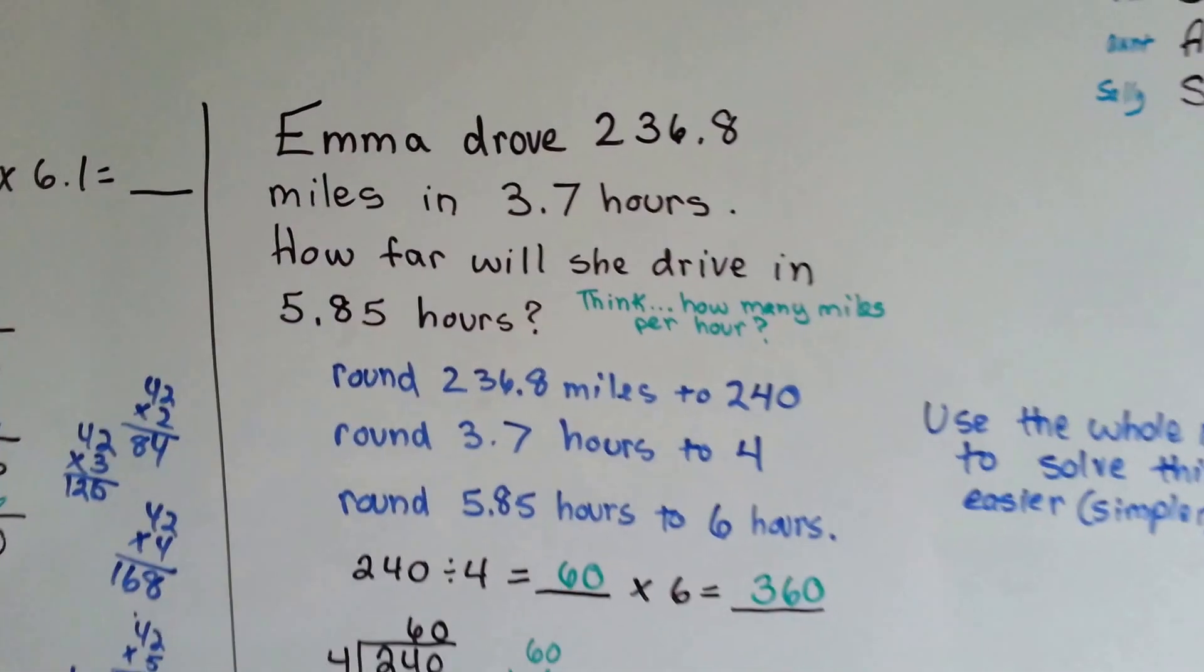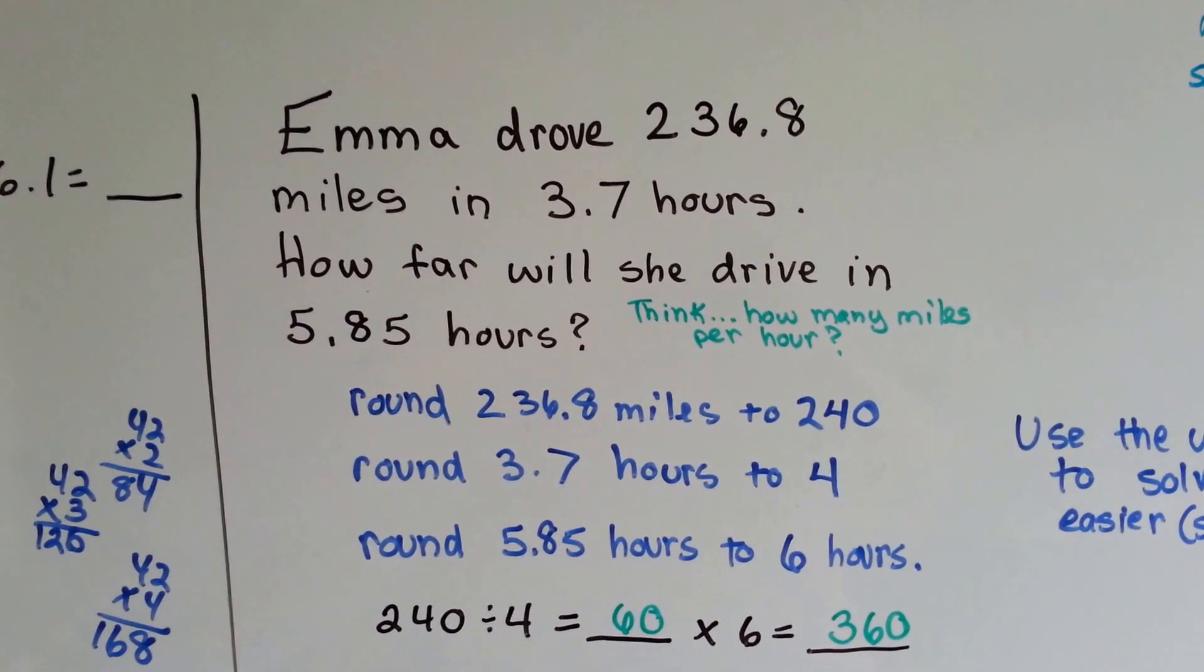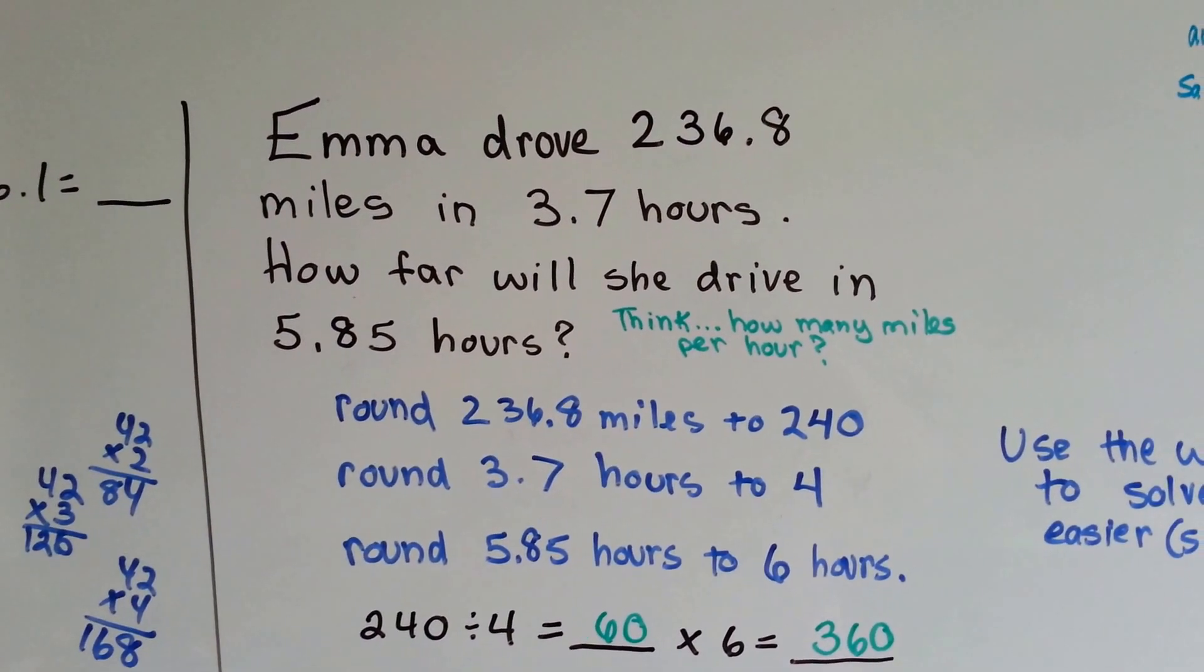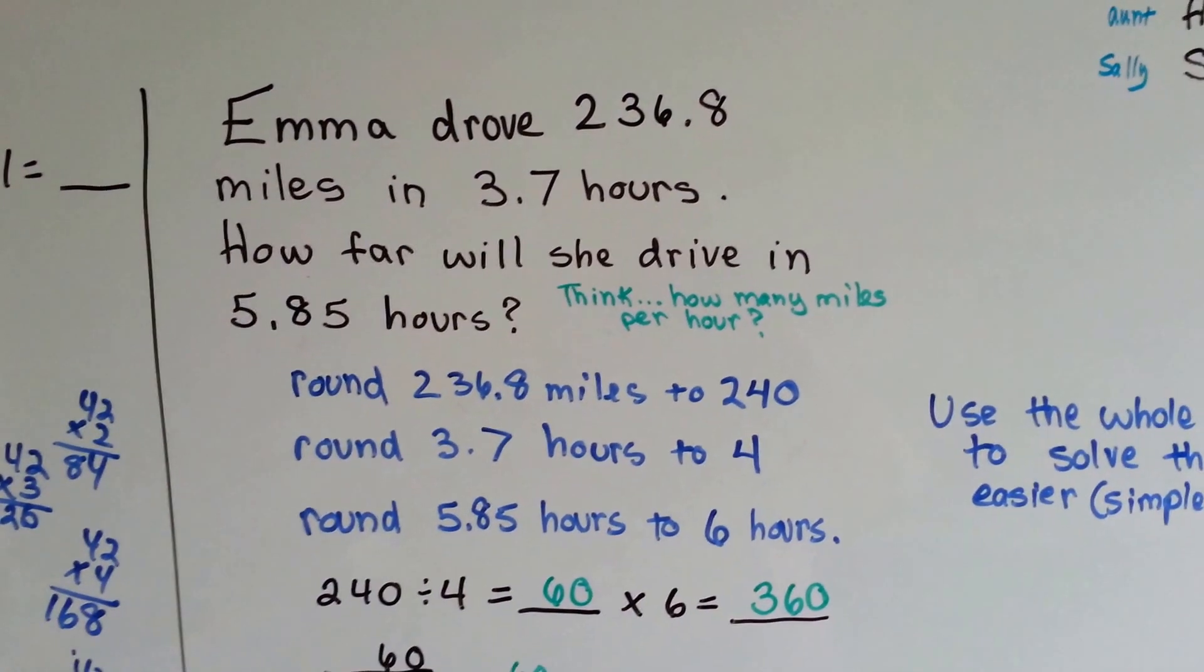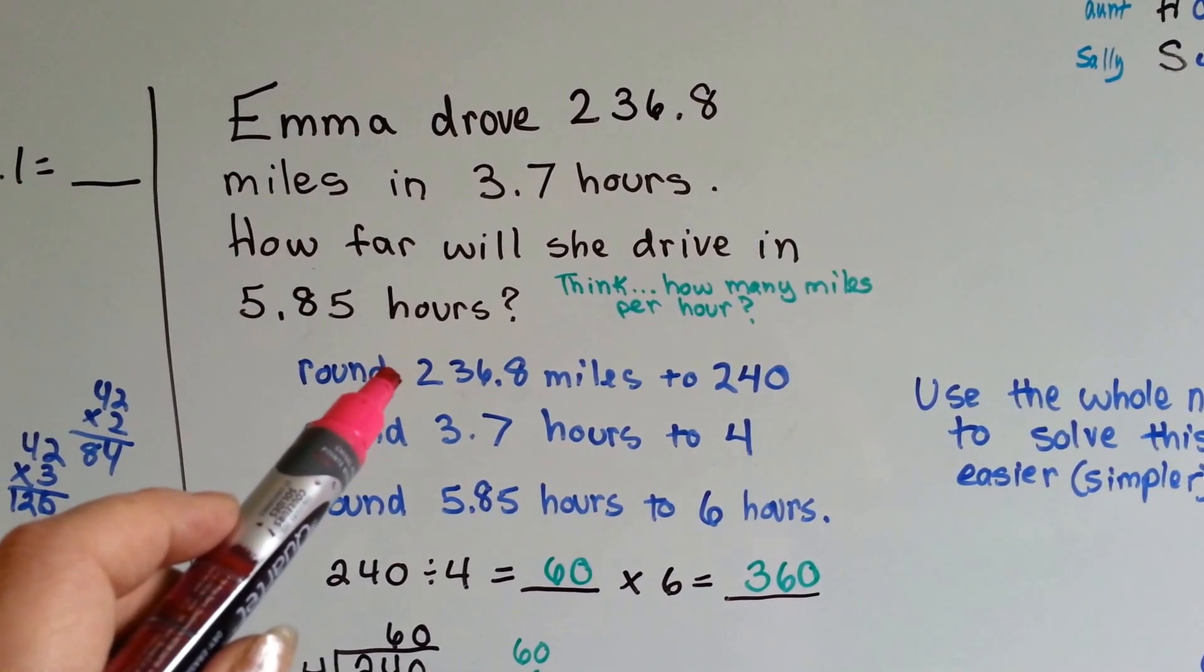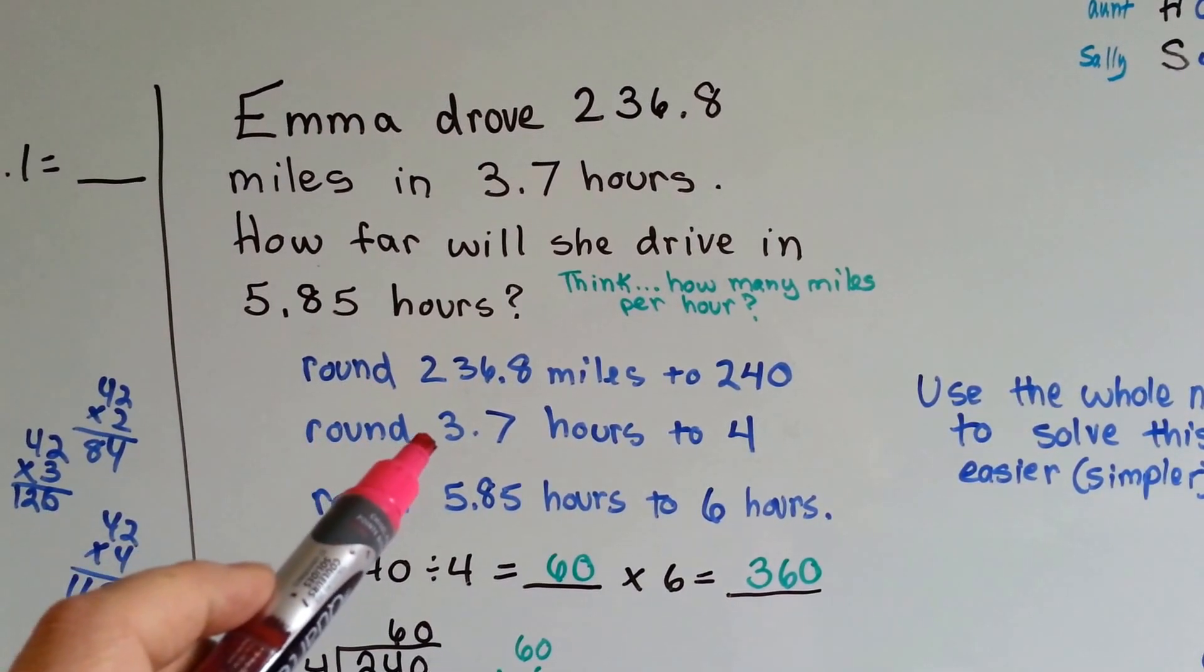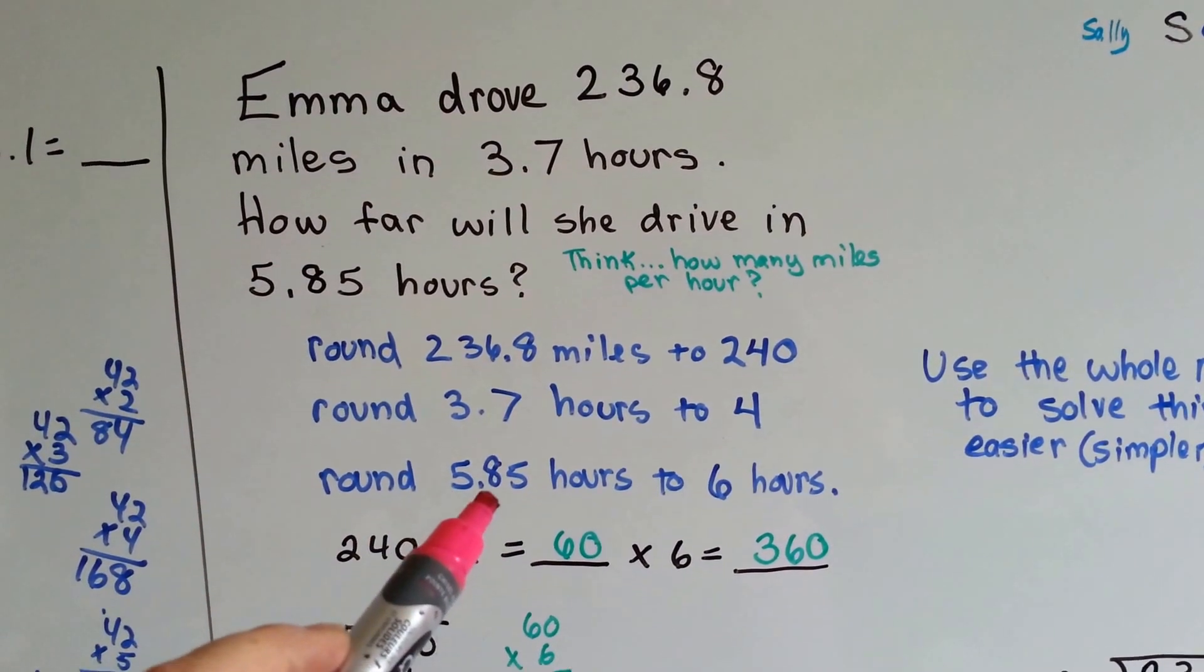Emma drove 236.8 miles in 3.7 hours. How far will she drive in 5.85 hours? Let's round this. We're going to round the 236.8 to 240. We're going to round the 3.7 to 4 and we're going to round the 5.85 to 6.